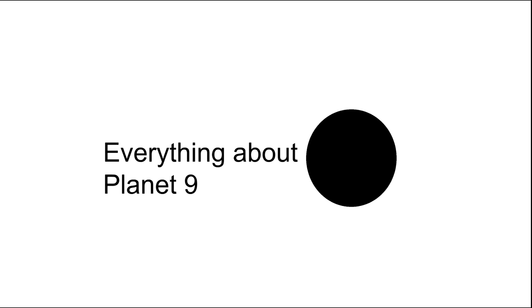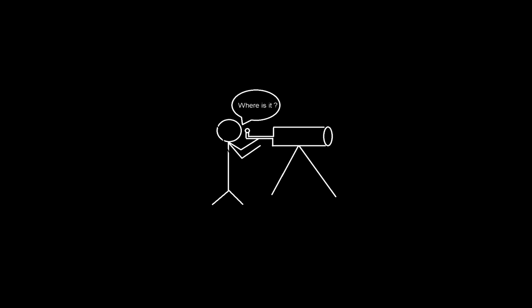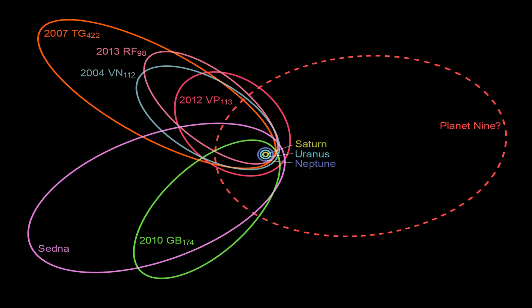So just to get this out of the way, no one has actually seen Planet 9, but scientists predict Planet 9's existence based on the orbits of objects that are further away than Neptune.